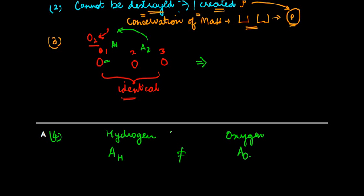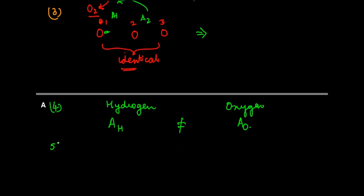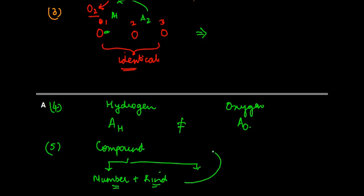But there's a different level that, whenever you have any given compound, in that the number of atoms of various elements which is there, or the kind of atoms which are there—so the number plus the kind of atoms which are used to form a particular compound is always the same.